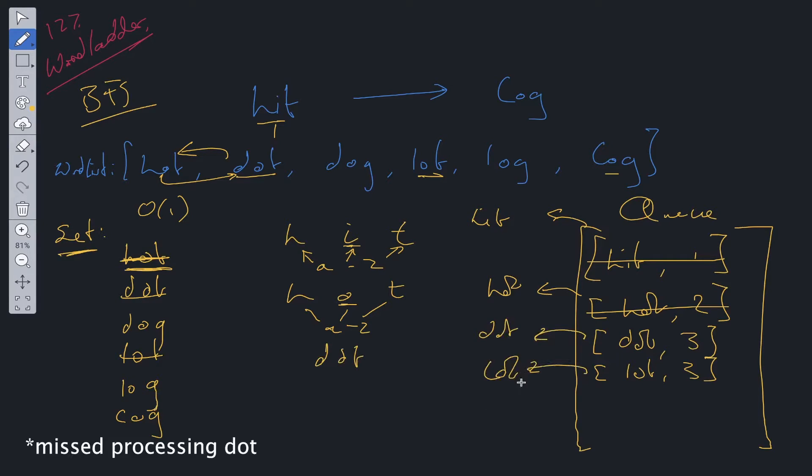I'll speed up this process. Can any of lot's characters be updated by one to a word that is found within set? Well it can be updated to log. So we can add log into the queue. Update the count to four. Obviously we've seen dot. We've seen lot. And before we shift off of queue we need to remove log from the set.